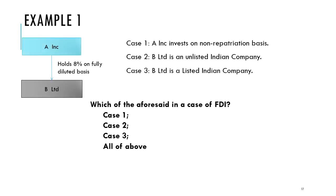Consider an example: A Incorporated holds 8% on a fully diluted basis of the equity of B Limited. Case 1: A Incorporated has invested on a non-repatriation basis — so it is treated as domestic investment. Case 2: B Limited is an unlisted Indian company. Case 3: B Limited is a listed Indian company. The answer is Case 2, since any investment in an unlisted company by a person resident outside India is FDI, regardless of percentage.